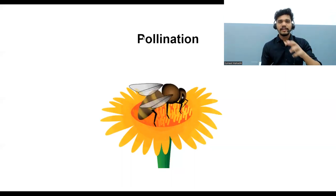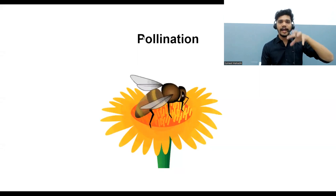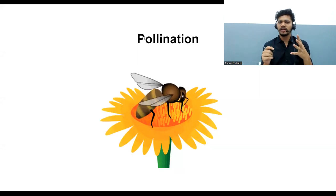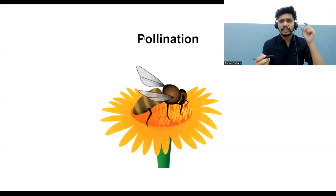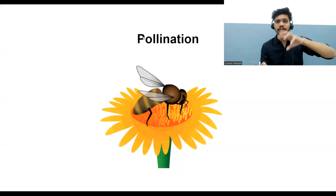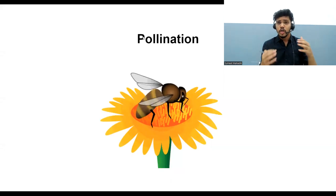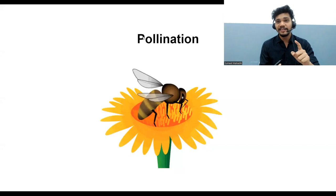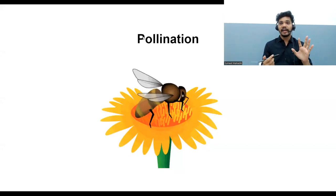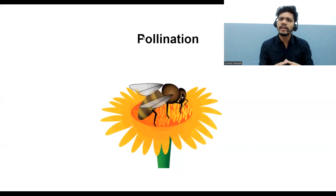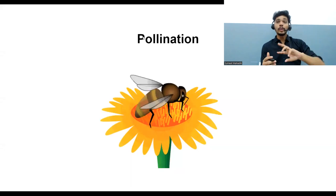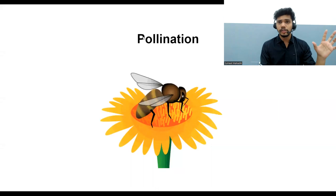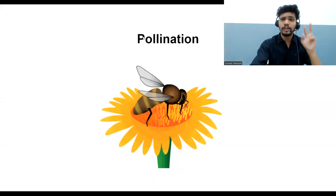Can you see the bee sitting on the flower? This insect is sucking nectar from the flower. The flower gives nectar to the bees, but in return the flower has a mechanism — that mechanism is pollination. Pollination is the transfer of pollen grains from the anther, and insects help with that process. There are two types of pollination: self and cross-pollination.